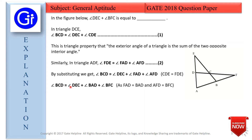Now, FAD can also be called BAD. Similarly, AFD can be called BFC. So we replace FAD with BAD and AFD with BFC in the equation.